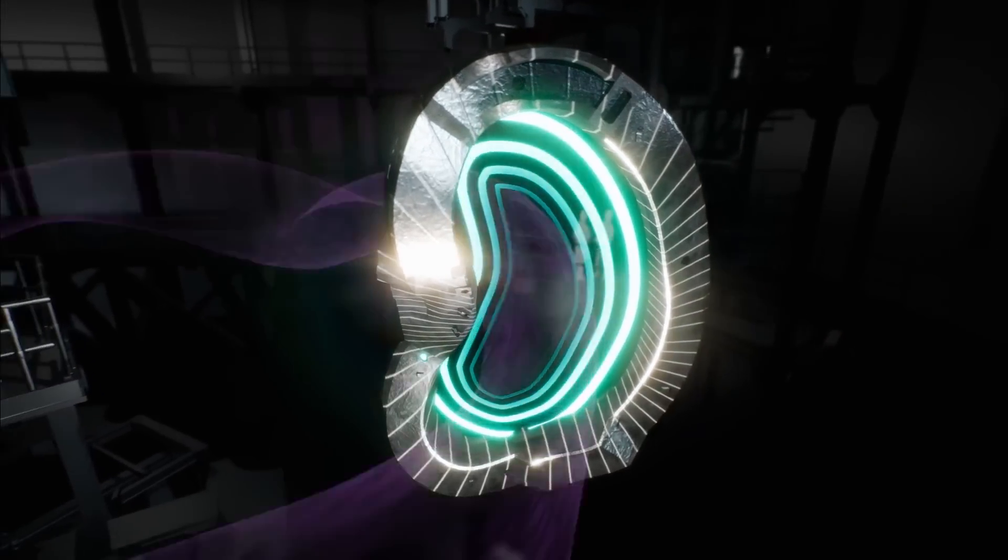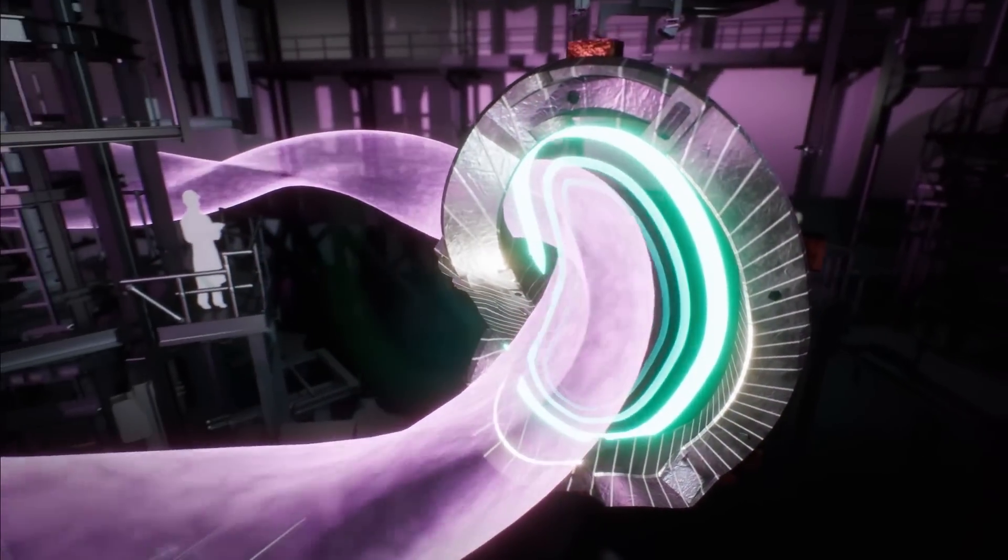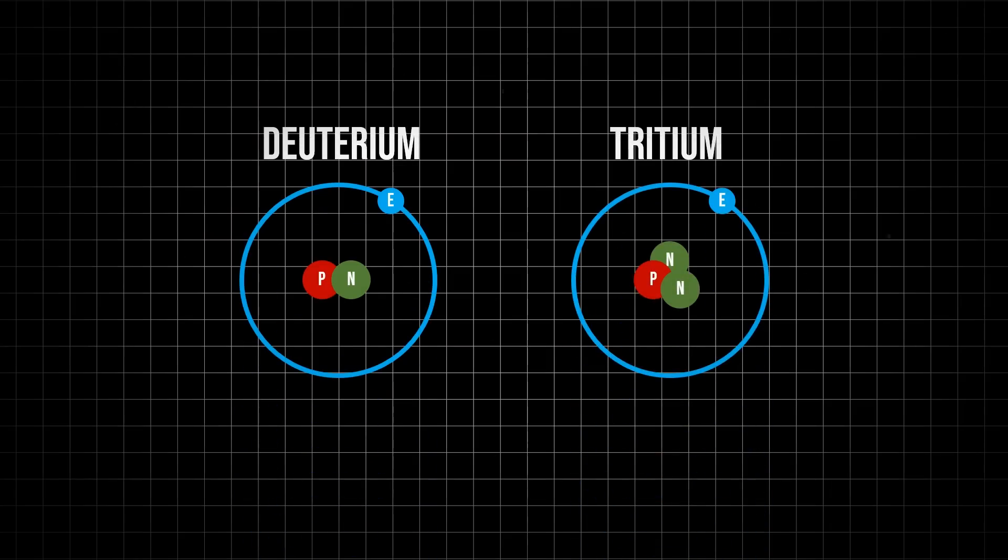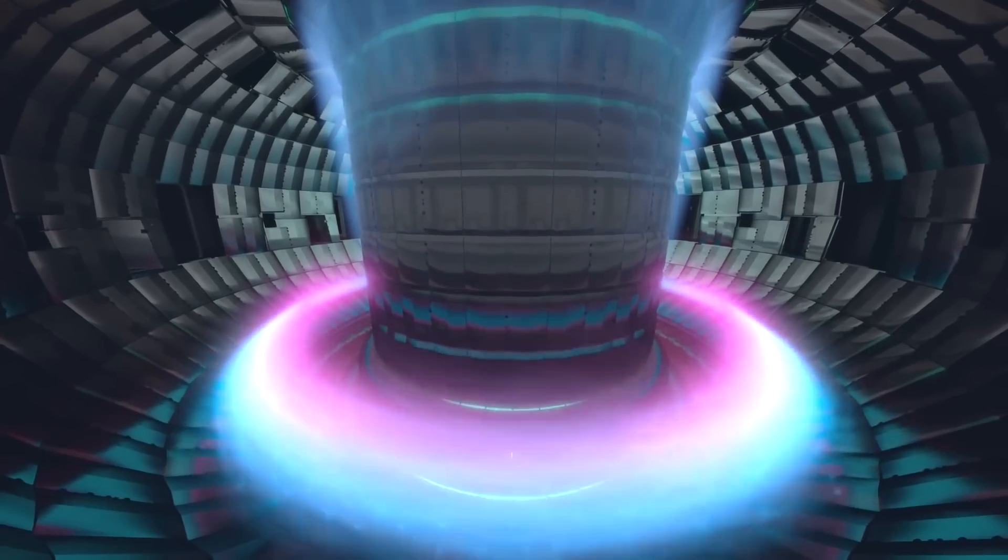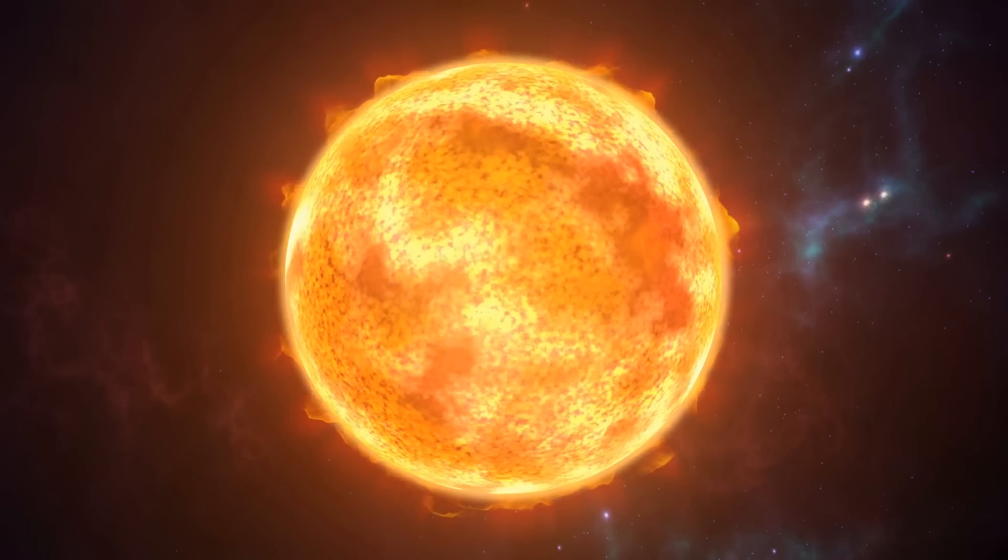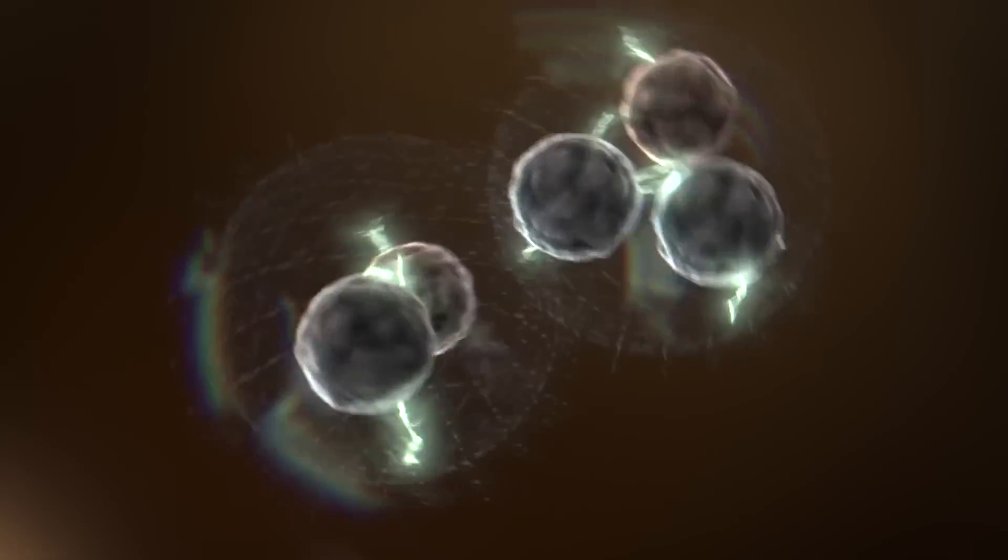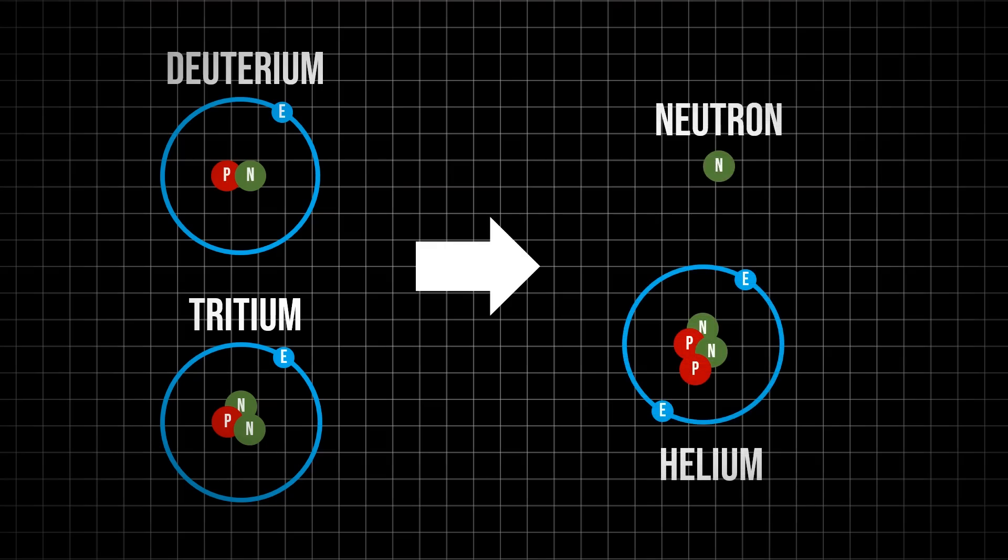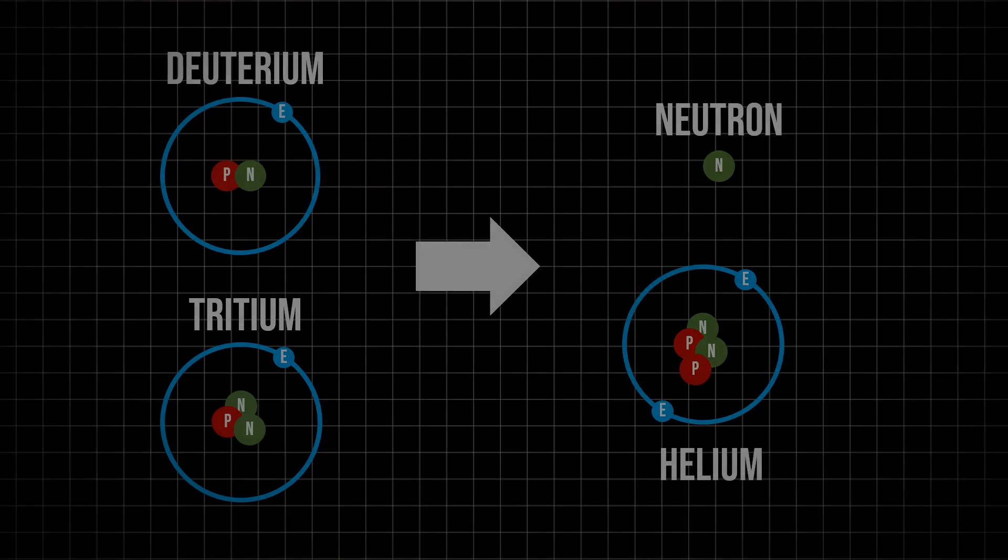The fusion process combines two special forms of hydrogen, called deuterium and tritium. These are known as isotopes and have one and two neutrons respectively. When these are packed together tightly enough for long enough, with temperatures around six times hotter than the sun's core, they can combine in a nuclear fusion reaction to create helium and a spare neutron. Now, this is where we start to run into issues.